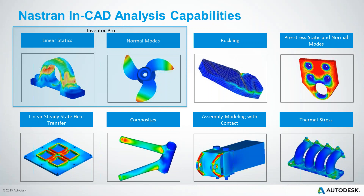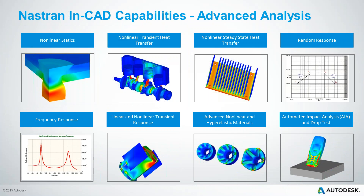Taking that to dramatically different levels within NASTRAN NCAD, we can do buckling analysis or critical failure on a design, pre-stress, thermal analysis — whether that's steady-state heat transfer, thermal stress, or non-linear steady-state transient heat transfer. We can do frequency response or random response, and the highest level of analysis is non-linear analysis with unique material types, physical contact, or drop analysis. All of this is embedded right inside your Inventor environment.